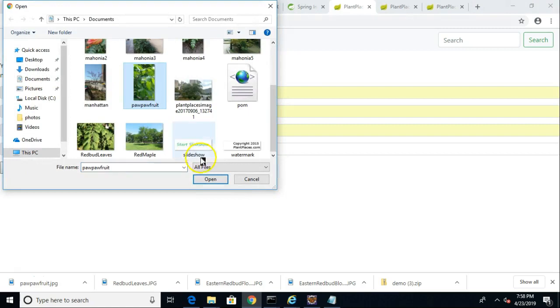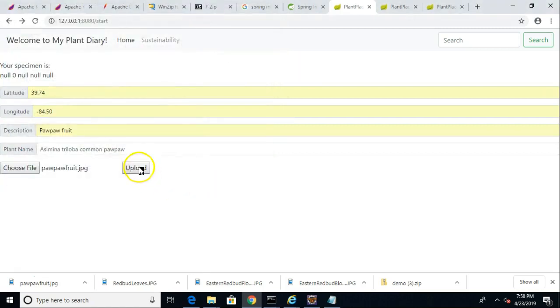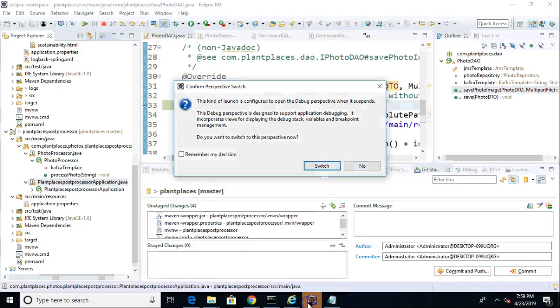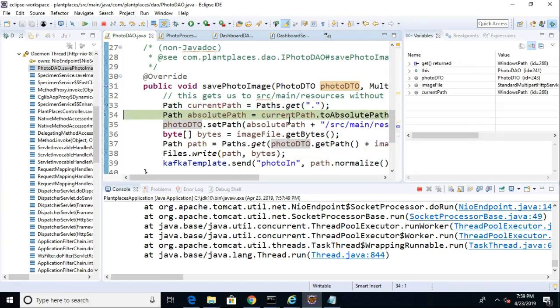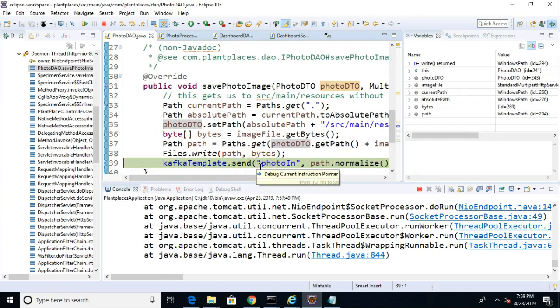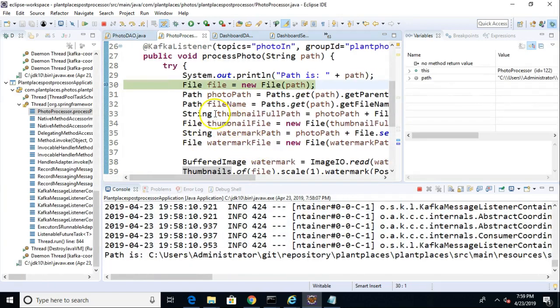Pawpaw fruit, Asimina triloba. I've set a few breakpoints so that we can watch what happens here. So I choose File, and I pick the pawpaw fruit, one of my favorites, and then we choose Upload. Now you notice that my breakpoint hits, so I'll go through this relatively quickly, but what we're going to see here is that it's simply going to grab this photo from the user, and then on line 39, it's going to send this item to the photo in Topic.